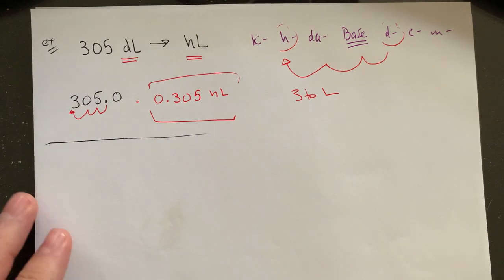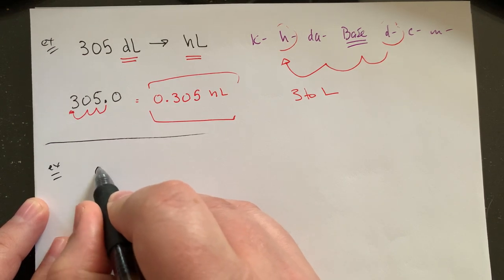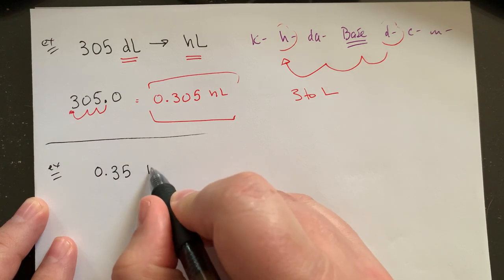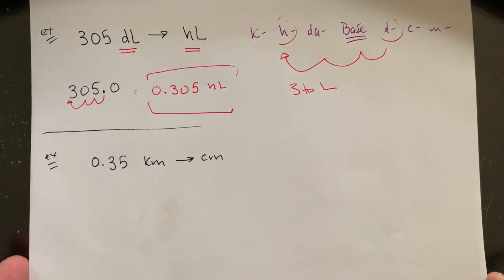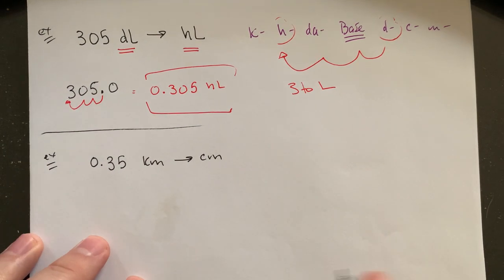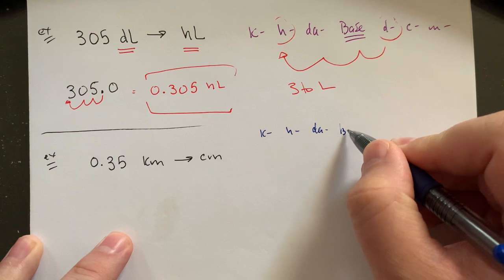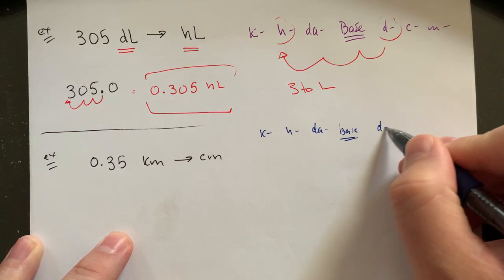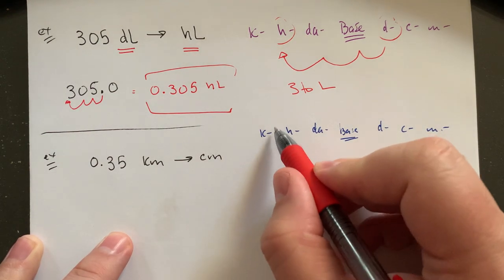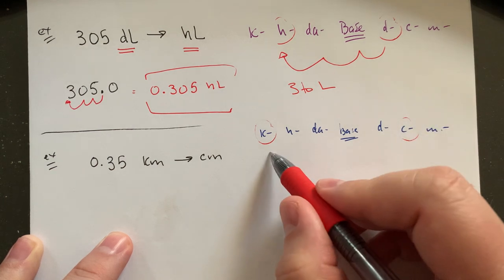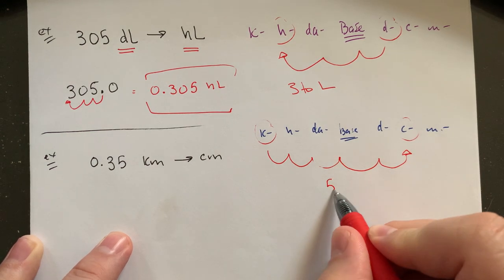Let's do just one or two more. Let's do a big one. Let's go from maybe 0.35 kilometers and convert that all the way down to centimeters. Let's really span and go almost all the way across. So kilo, hecto, deca through the base, deci, centi, and then milli. My conversion from kilometers down to centimeters—kilometers, centimeters almost all the way at the end. So that's one, two, three to get to the base and four, five to get down to centimeters. So that's five to the right.